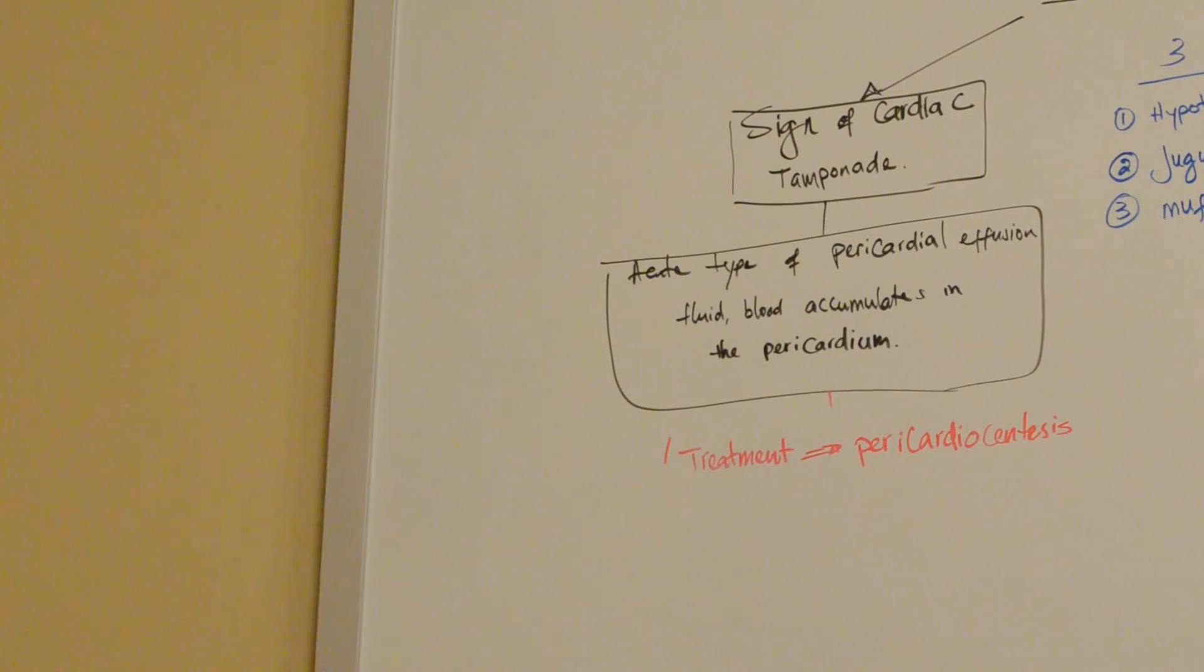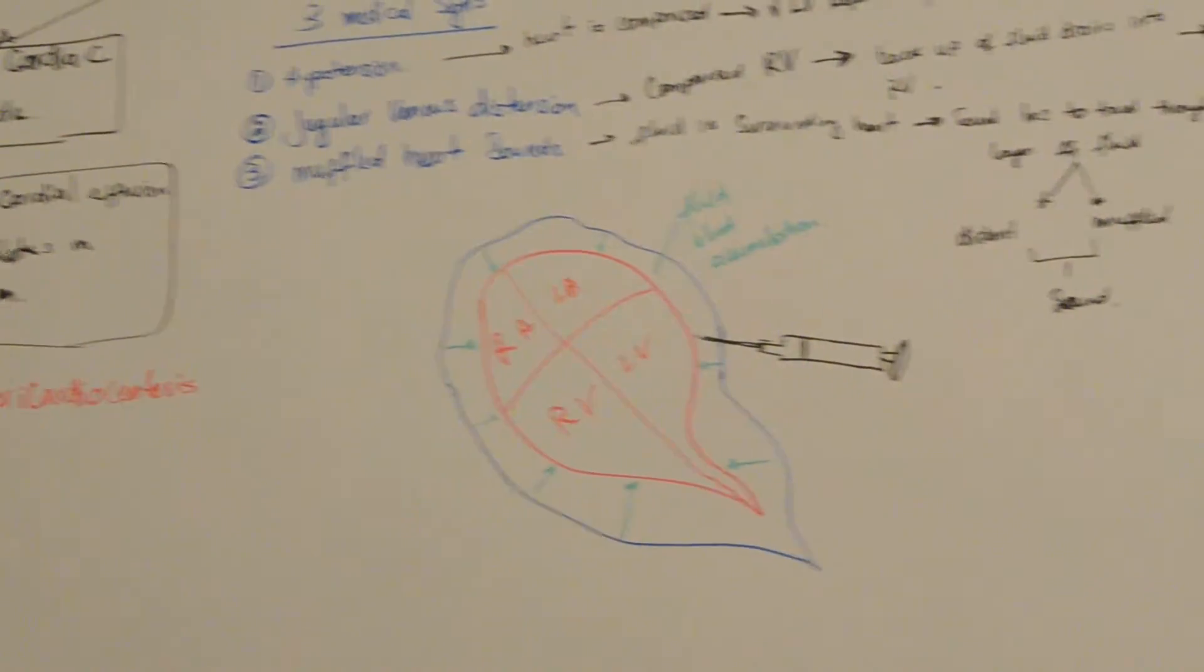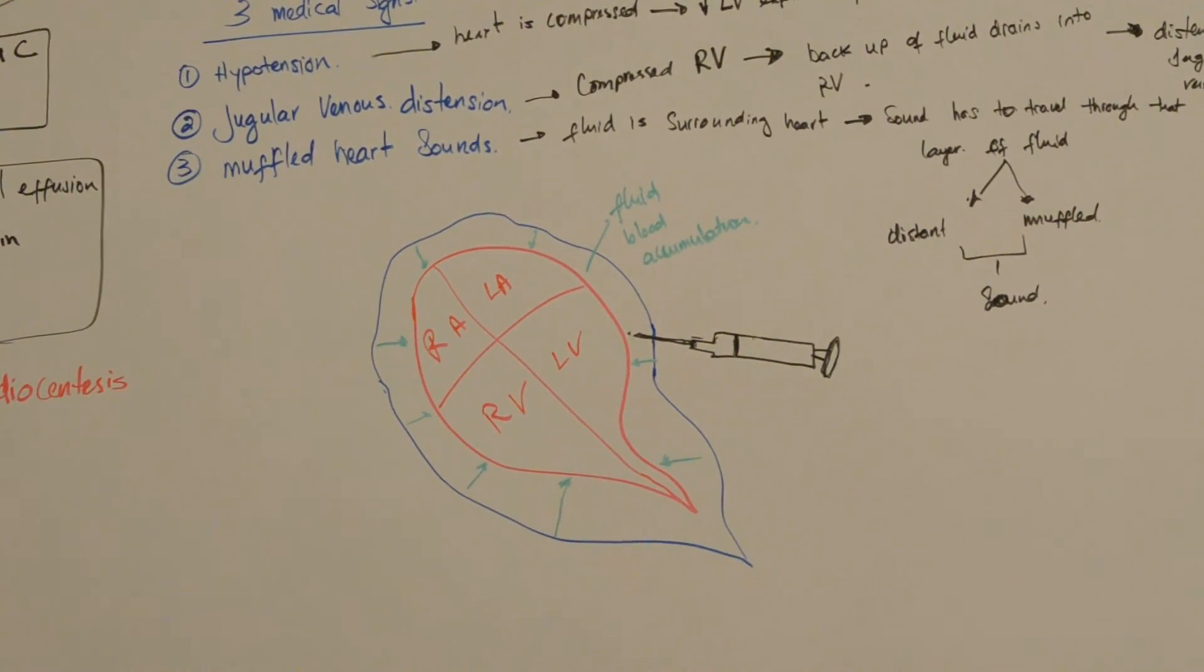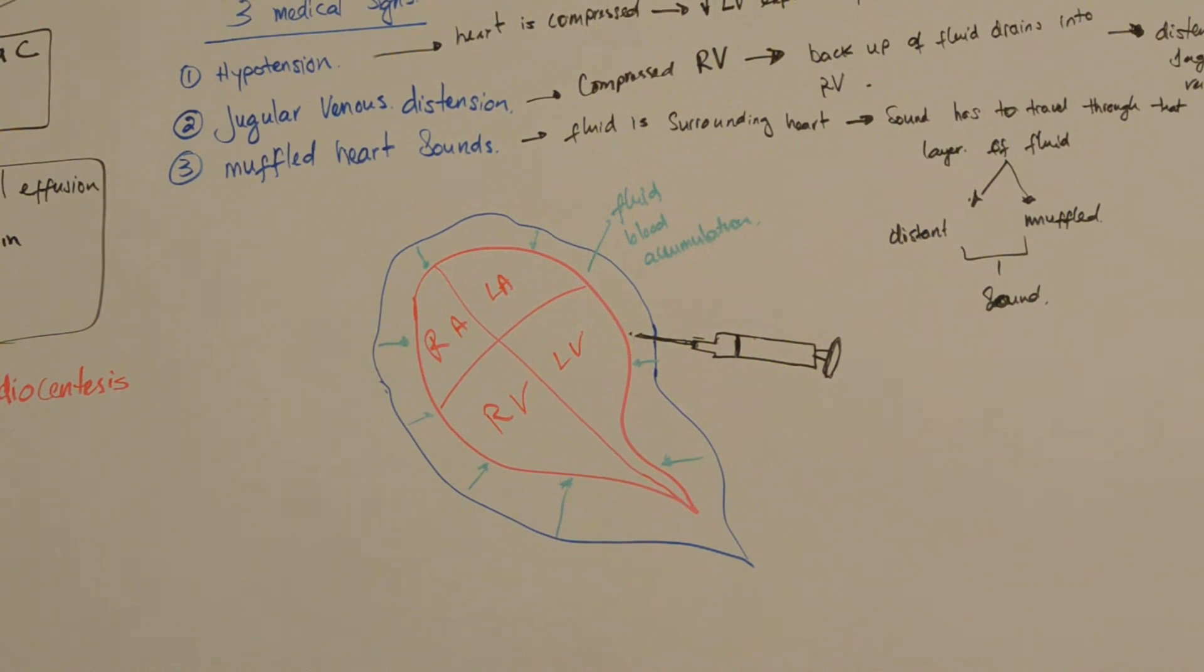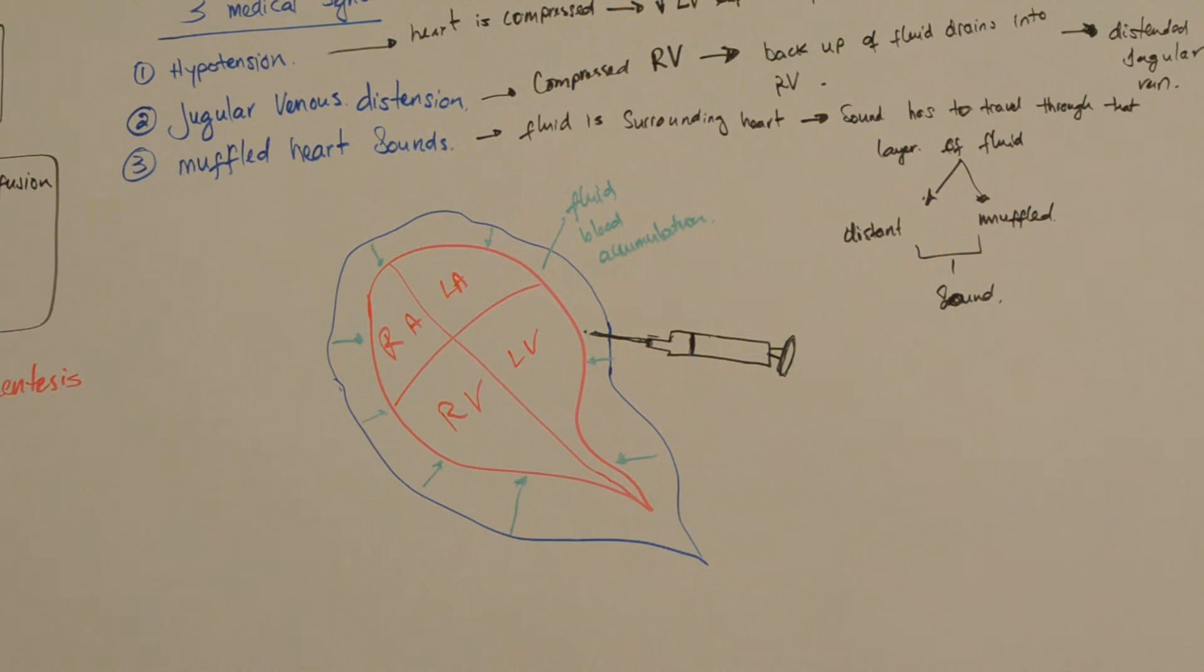The treatment for cardiac tamponade is pericardial synthesis. It is a procedure where fluid is aspirated from the pericardium. Stick a needle in here, try to aspirate the fluids out to decompress the heart.